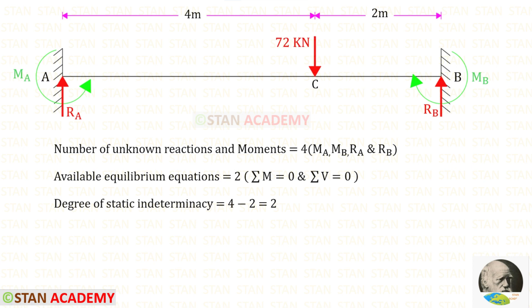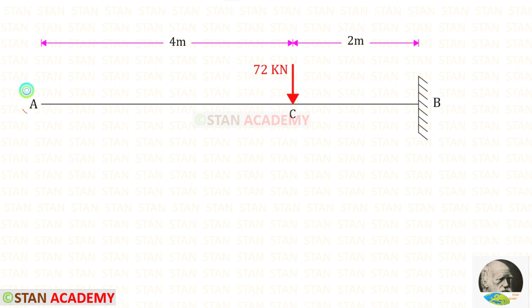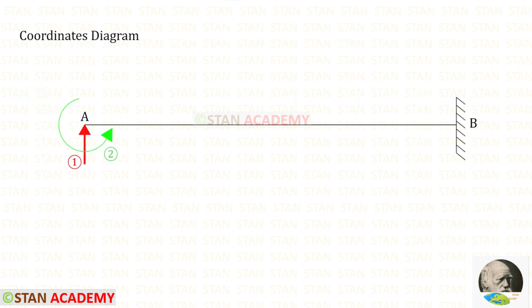Now let us find the degree of static indeterminacy. In this beam the number of unknown reactions and moments are 4. The available equilibrium equations are 2. The degree of static indeterminacy will be 4 minus 2, which gives us 2. Since there is a settlement at support A, we have to release the vertical reaction Ra and the moment Ma. When we remove both of them, point A becomes a free end. Now let us make the coordinates diagram, keeping Ra as the first coordinate and moment Ma as the second coordinate.